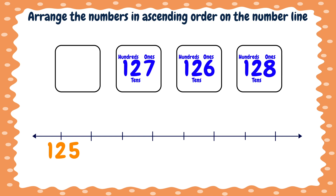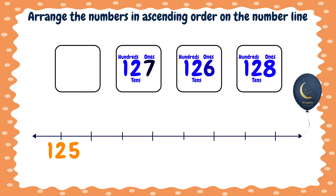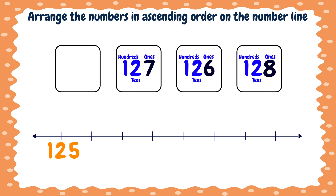Now we have three numbers left. We compare the ones places because the hundreds and tens places are equal. Here we have seven, here is six, and here is eight. Which number is the smallest? The number six. Good job. So the number one hundred twenty-six is the smallest.